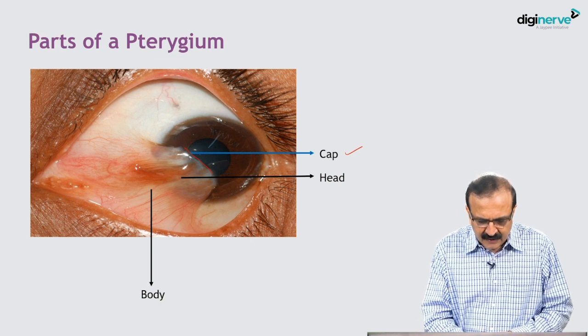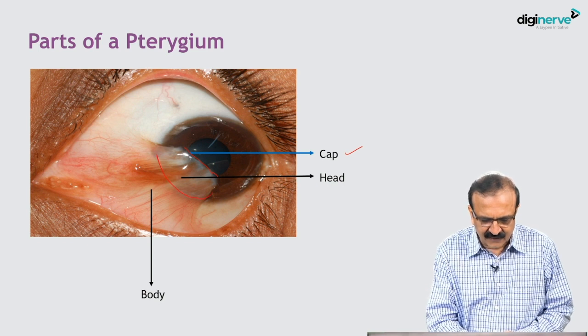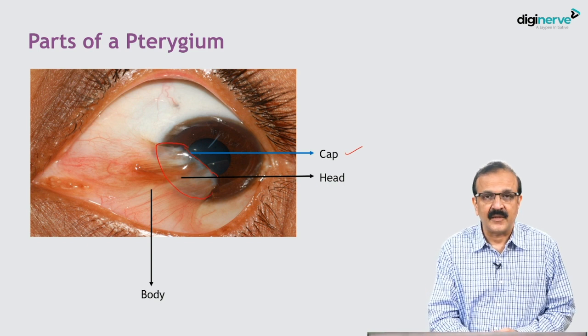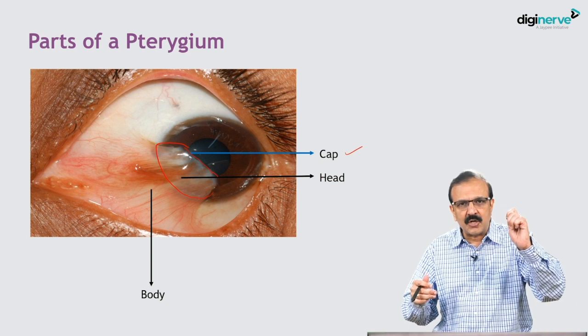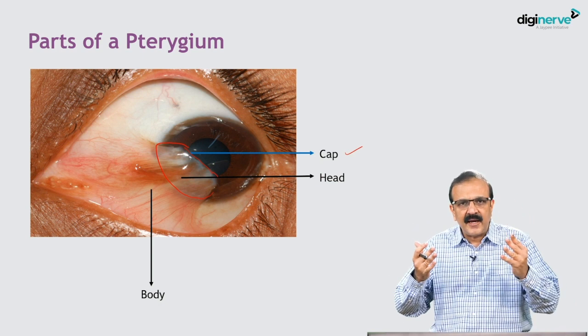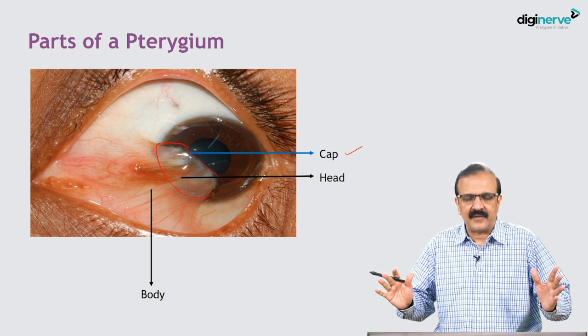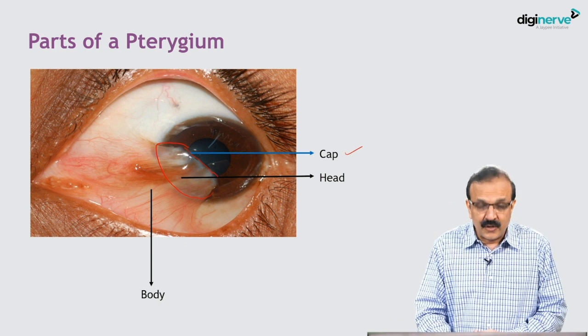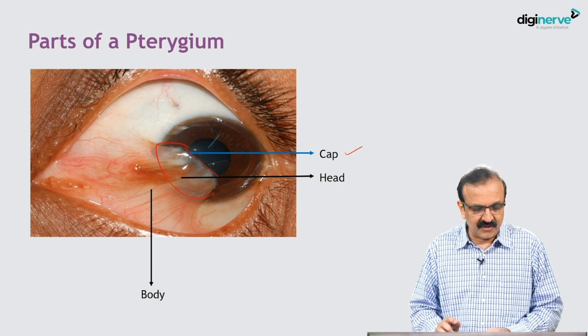The main part from the cap to the surface of the cornea is called the head of the pterygium. Imagine a human body: a cap at the top, after that comes the head, after that comes the body. So you have a cap, a head, and a body of the pterygium. This is how the parts of the pterygium are described.